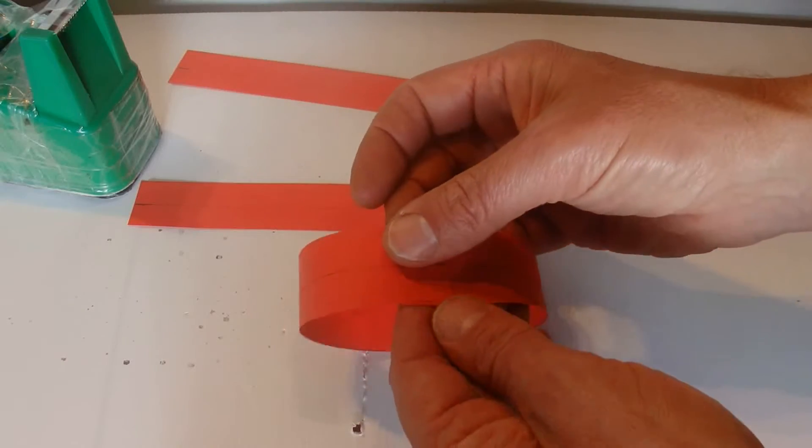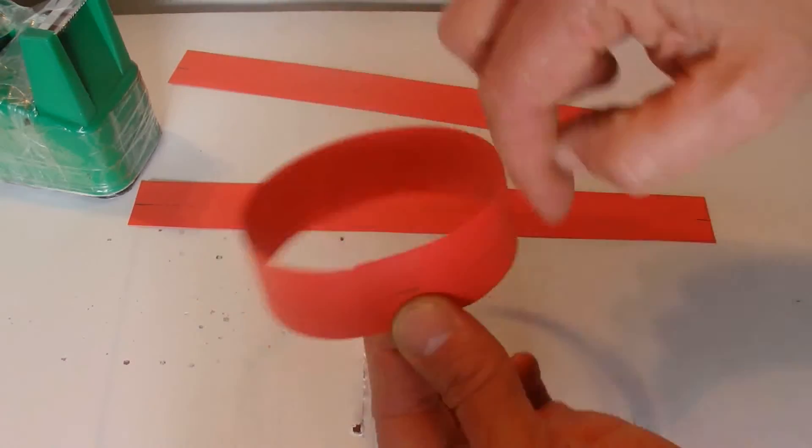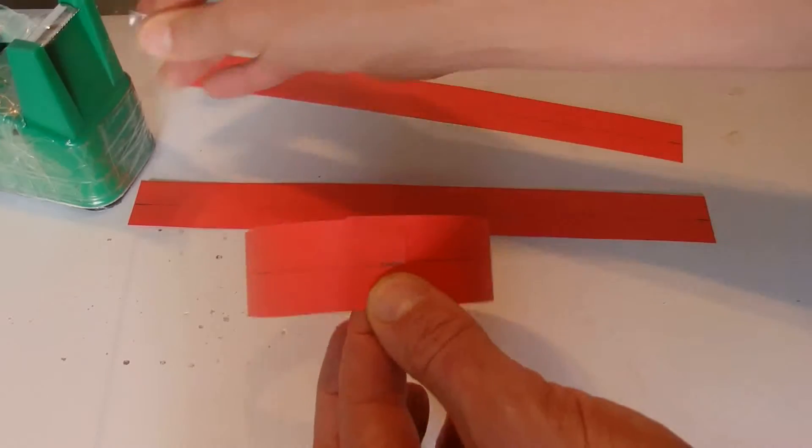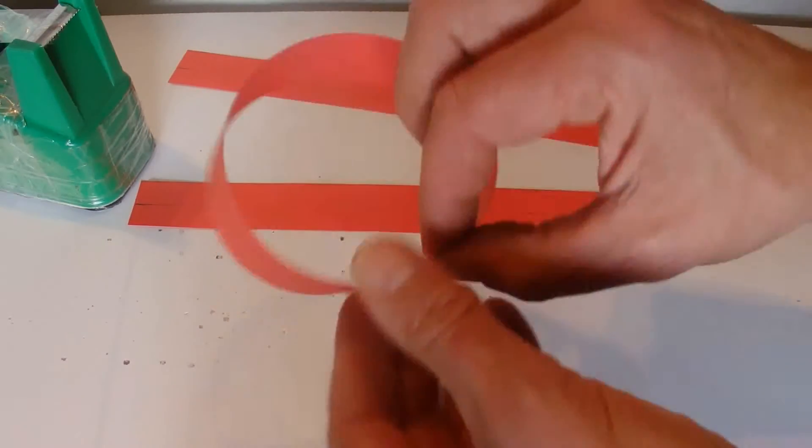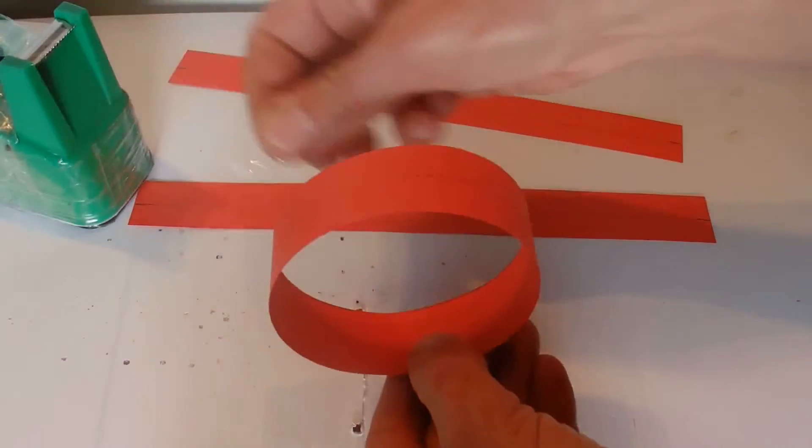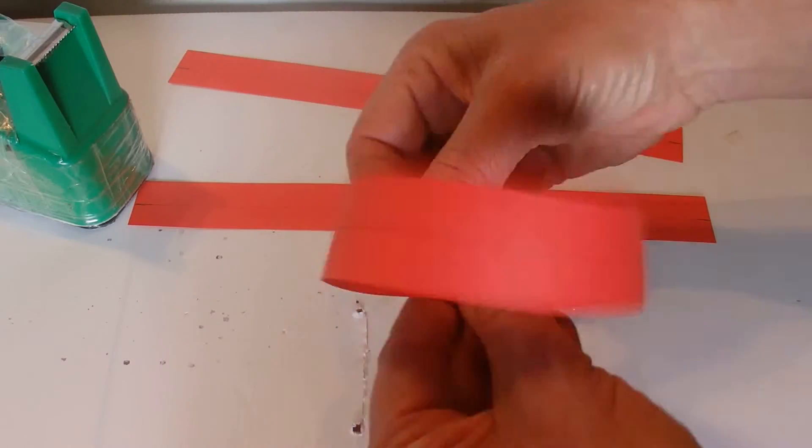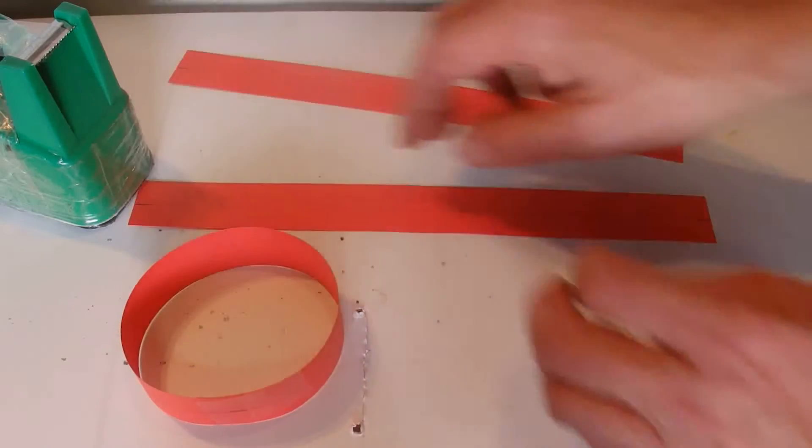So first of all, I'm just going to make a standard loop and I'll put a little bit of tape on both sides. Make a standard loop first, I'll just put that to one side.